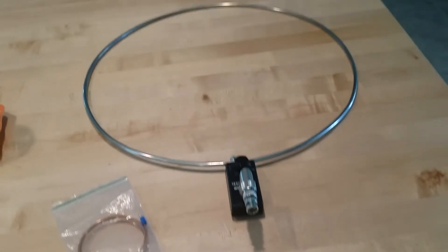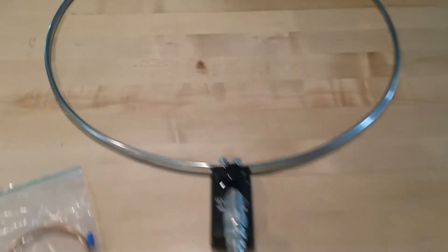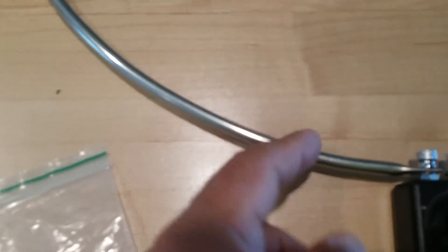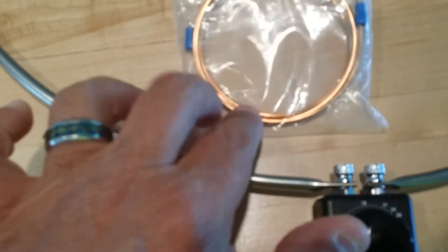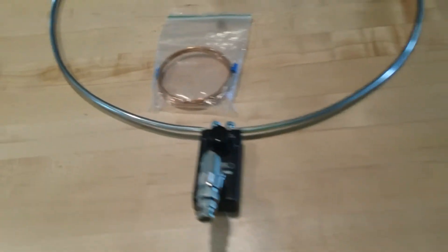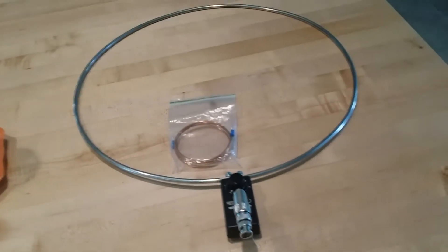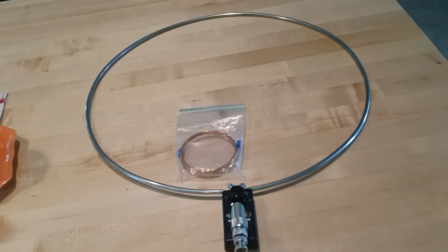And what this is going to do is actually make your magnetic loop more efficient. And why that is, is because the surface area of this is a lot greater than the surface area of this copper wire. And what that'll do is give your antenna greater efficiency.